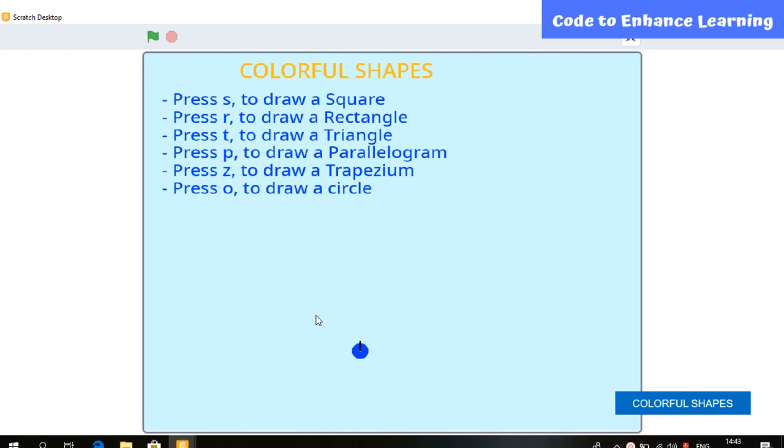When I press one of these keywords, what do you think? What will happen? Any idea? Let's see. Let's press S. Here you can see a square is formed.